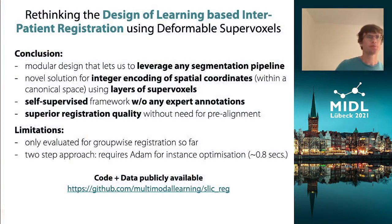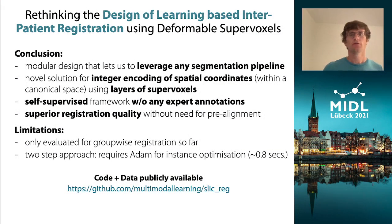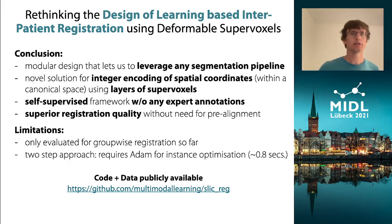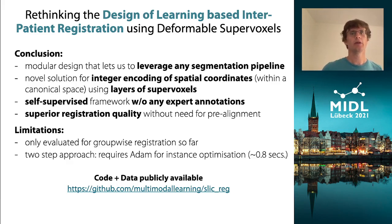To conclude, we have presented a modular design that lets us leverage any segmentation pipeline for registration — for example, a novel UNet might even perform much better. We propose a novel solution to get integer encoding of spatial coordinates in a canonical space using multiple layers of supervoxels, and we can employ any conventional or learning-based framework for self-supervision without any expert annotations. We achieve superior registration quality without the need for linear or rigid pre-alignment.